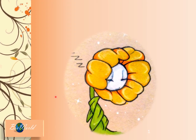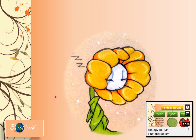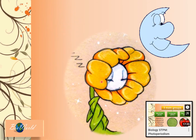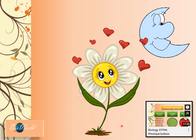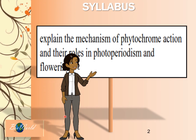Hi, I'm Vigness from Bioworld. Based on what we learned in my previous video on photoperiodism, you should know by now that flowering in plants is not determined by the length of daylight. Instead, it is determined by the relative length of darkness the plant is exposed to. In this video, I'm going to explain the mechanism of action in flowering. The syllabus requires you to be able to explain the mechanism of phytochrome action and how it is related to photoperiodism and flowering.